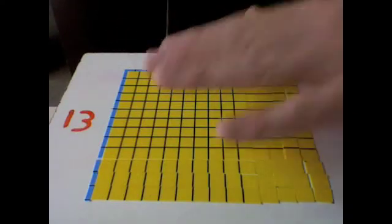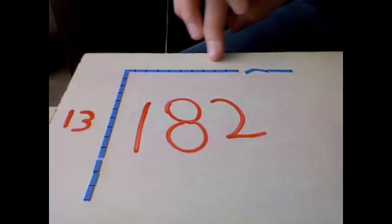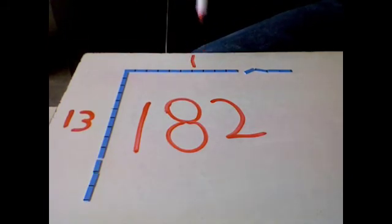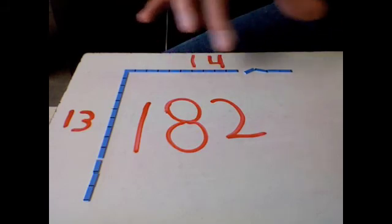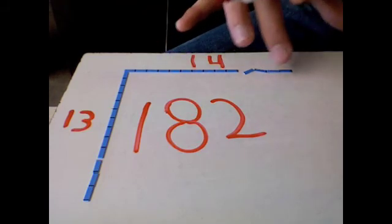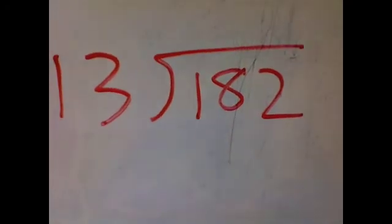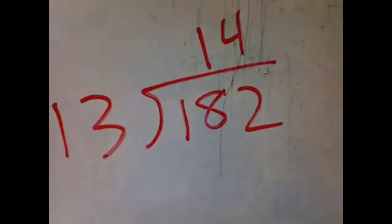182 divided by 13 equals 14. 10, 11, 12, 13, 14. 182 divided by 13 equals 14.